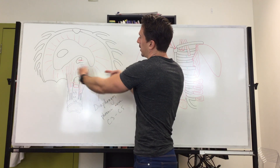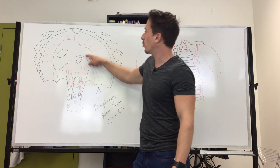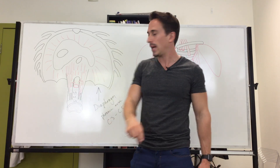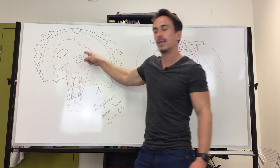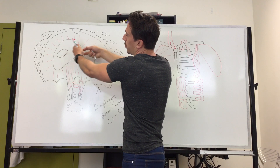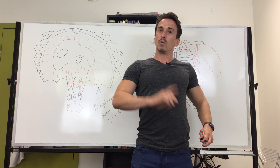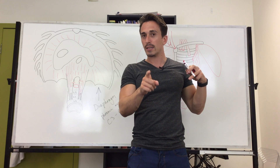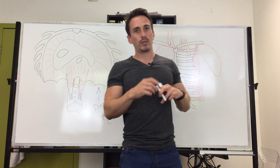When the diaphragm contracts, it pulls on all its connections to the thoracic cavity. The skeletal muscle pulls on the central tendon — a collagen-filled tendon in the middle of the diaphragm. This flattens the dome shape downward, increasing the thoracic volume. That decreases the pressure and air rushes in. So the diaphragm contracting is the main muscle for inspiration.